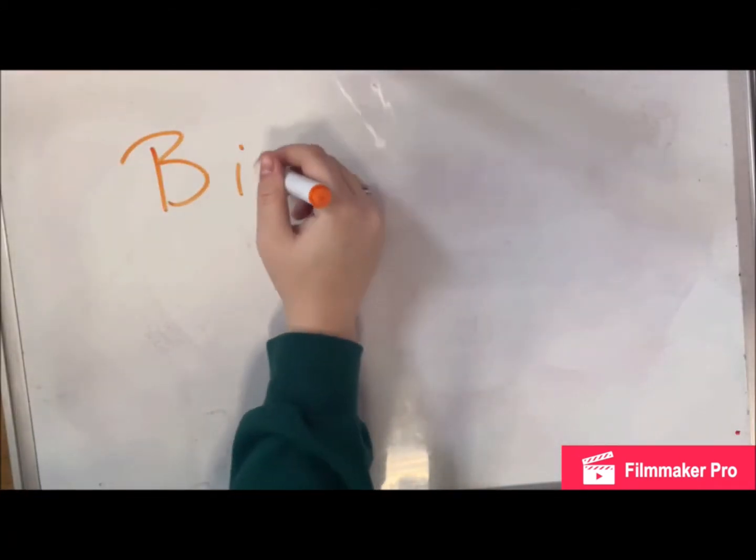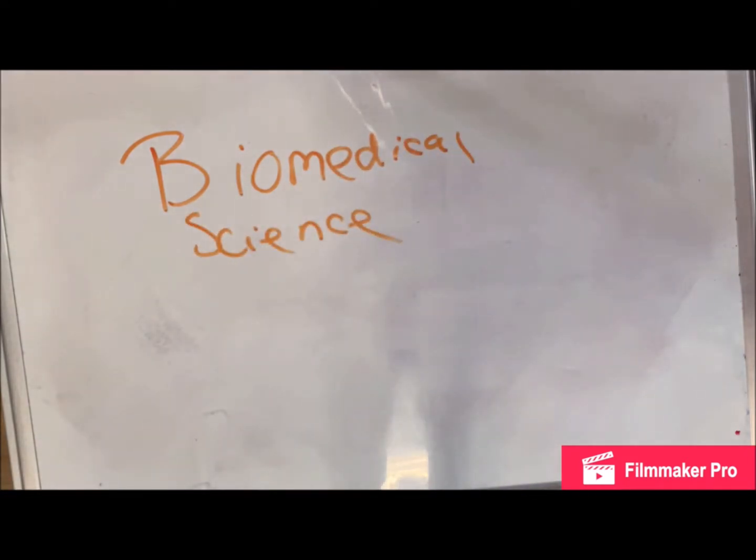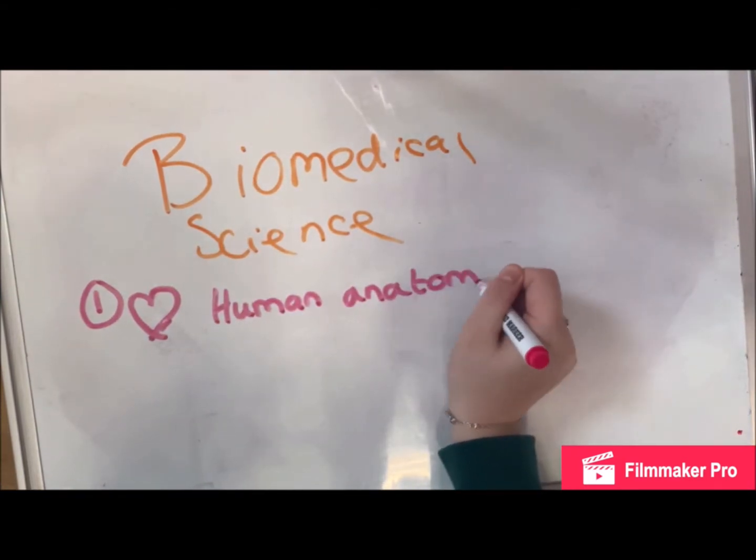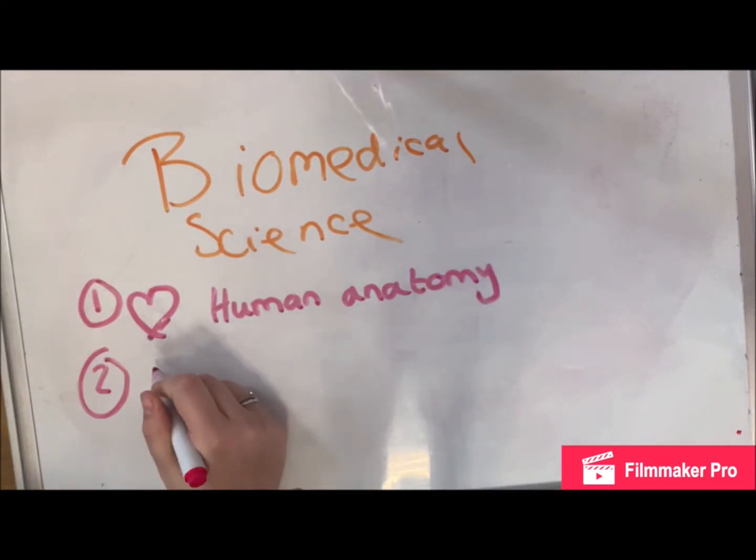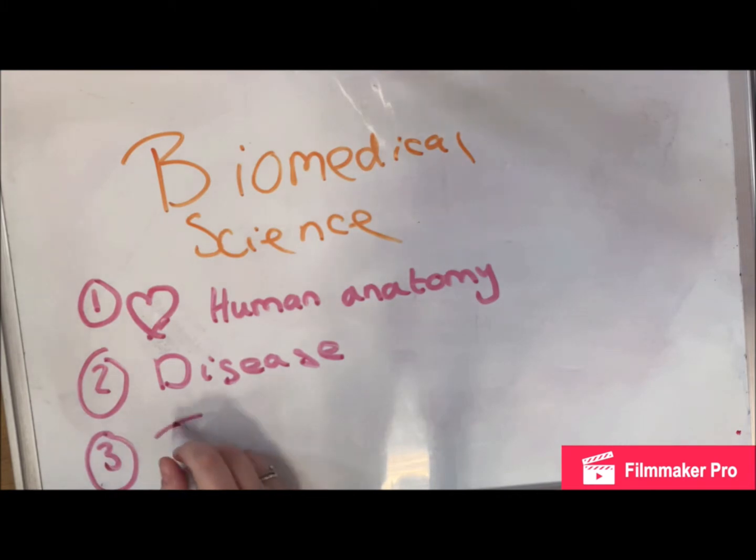There are quite a few reasons why I wanted to study biomedical sciences at university. One of the main reasons was I loved the human anatomy. I fell in love with it during GCSEs and A-level. It was just such a fascinating subject, and also diseases with the human body, how it worked, how it interlinked, and also how to treat them and curative methods as well.